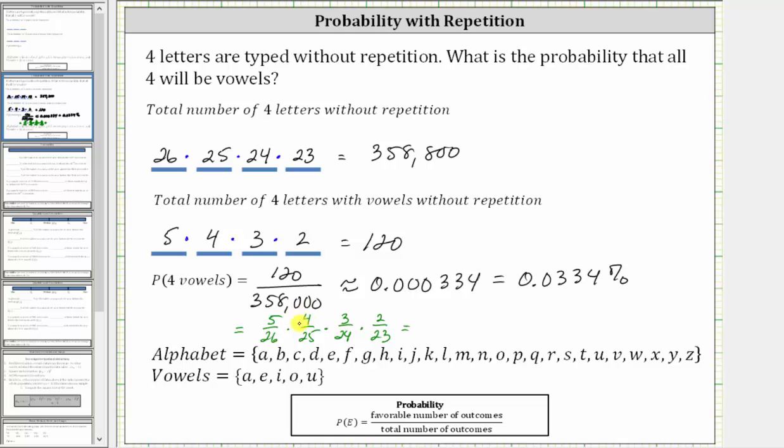Notice in the numerator we have 5 × 4 × 3 × 2, which is 120. In the denominator we have 26 × 25 × 24 × 23, which is 358,800. This gives us the same probability. I hope you found this helpful.